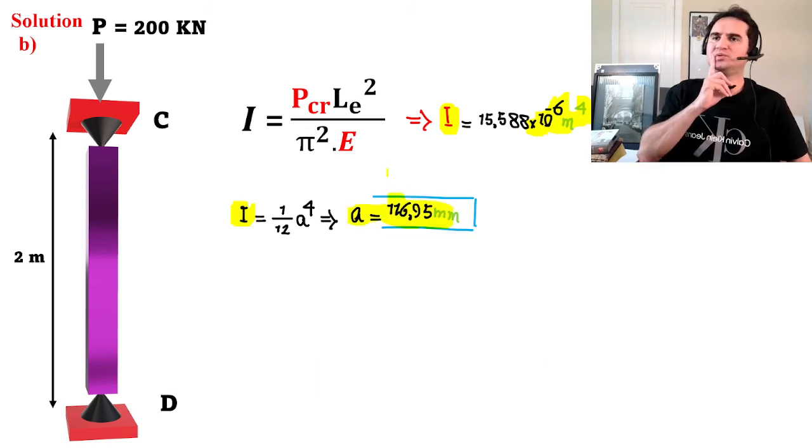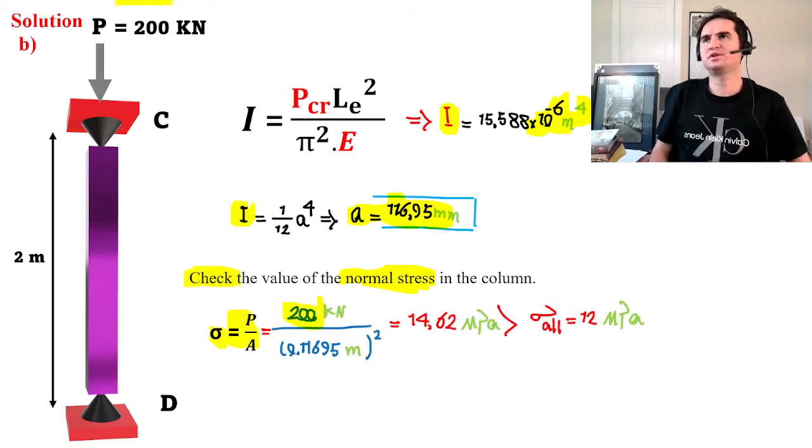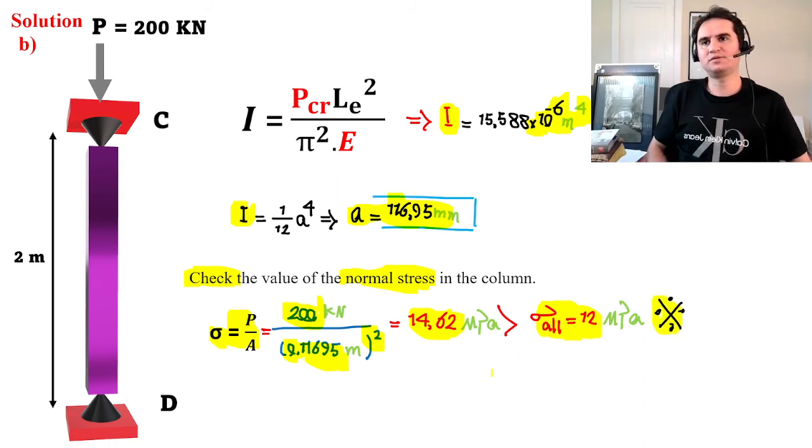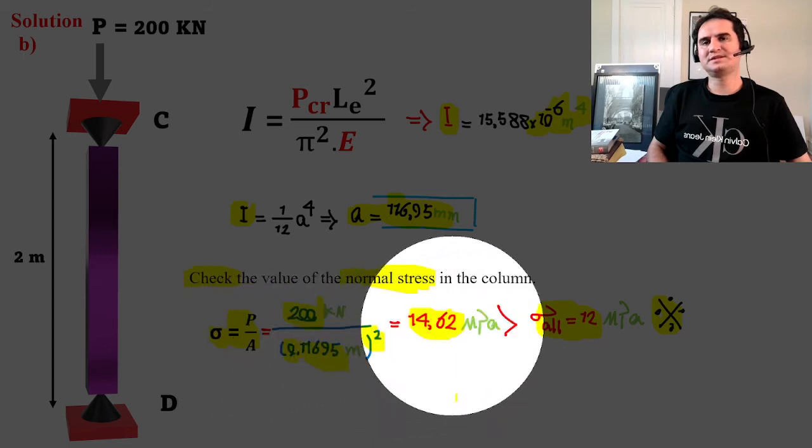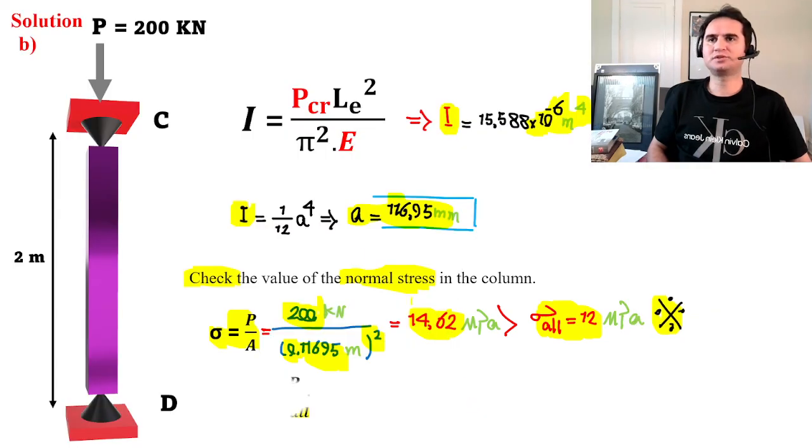We want to check the value for normal stress to ensure it's not exceeding the acceptable one. That's σ = P over A. 200, this time the original force, divided by the cross-sectional area, which is this number squared, gives us 14.6, which is bigger than our allowable stress of 12 megapascals. So this time this is not acceptable. If you have a normal stress higher than your allowable stress, that design is not acceptable.